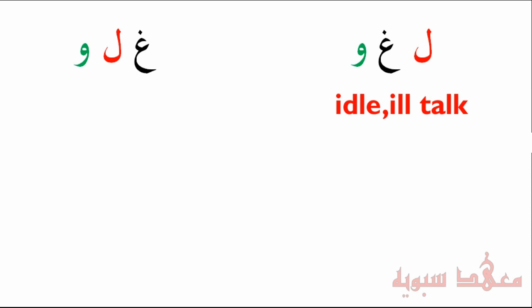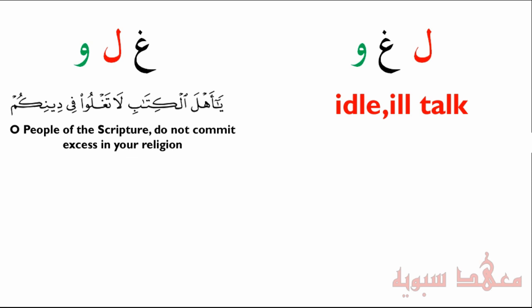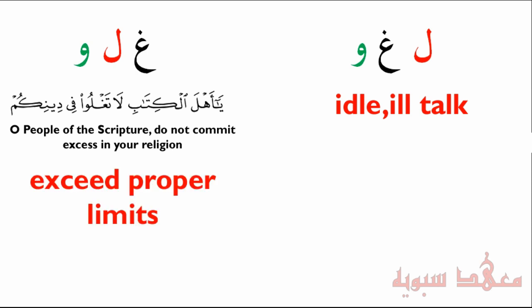An interesting aspect of the language is that when we rearrange these three base letters, we get another three-letter root used in the Quran: the غين, the لام, and the واو. An example of this root being used is where Allah says: يَا أَهْلَ الْكِتَابِ لَا تَغْلُوا فِي دِينِكُمْ — 'O people of scripture, do not commit excess in your religion.' The excess here is calling Isa more than a prophet. So from this root we get the meaning: to exceed proper limits.